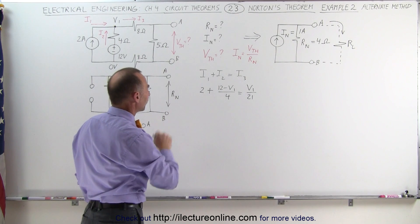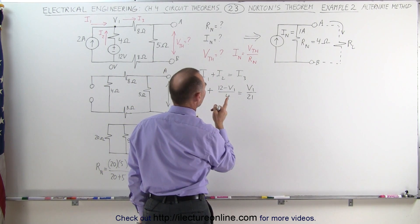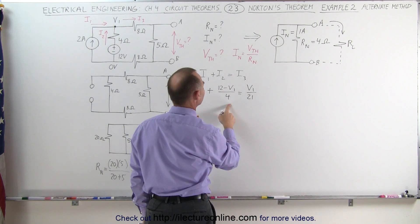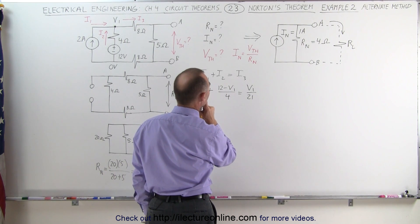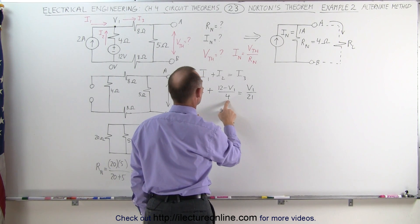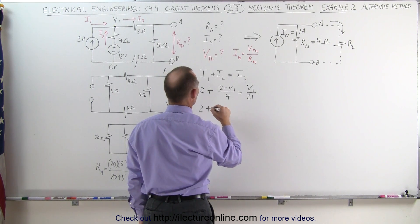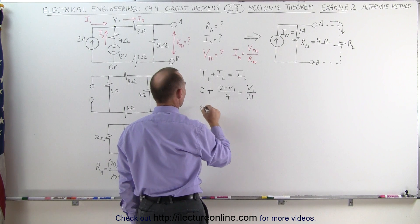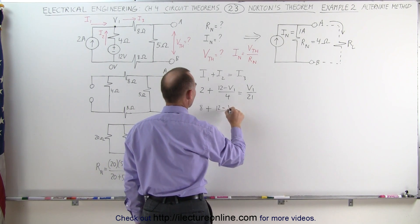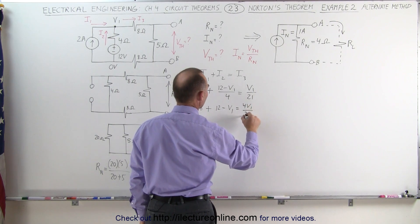We can solve for V1 by multiplying everything through by 4. When we do that we get 8 plus 12 minus V1 equals 4V1 divided by 21.